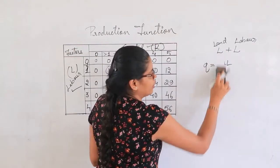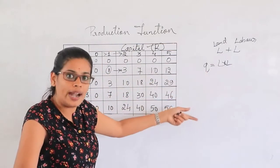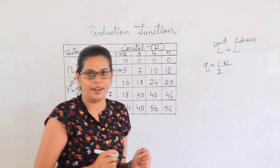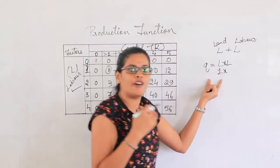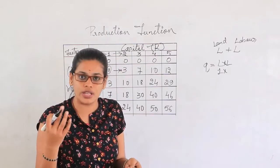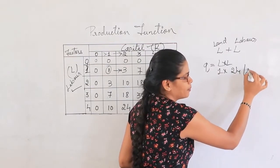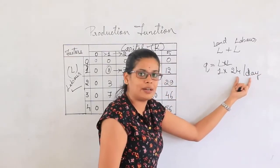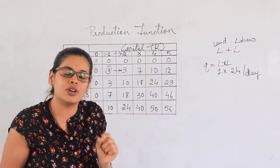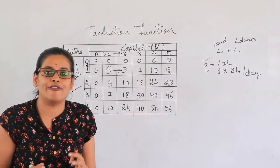The production function will again be Q equals K into L. For a farmer it will be land into labor. How is he going to define his output? For example, if he has only one acre of land, then one acre of land multiplied by the number of labor hours — say two hours per day — this efficiency of work is multiplied with the available land resources, and then we get the output Q. This is how we define the production function, and it differs from industry to industry depending upon the factors of production.